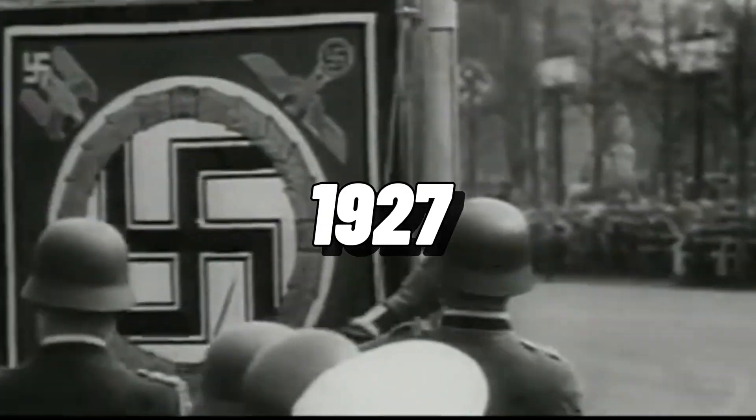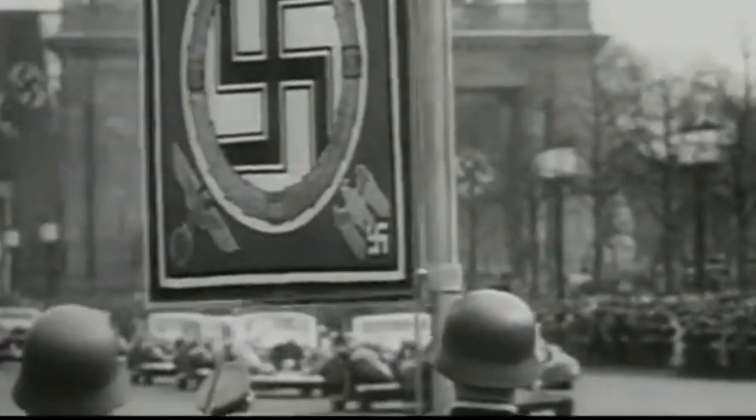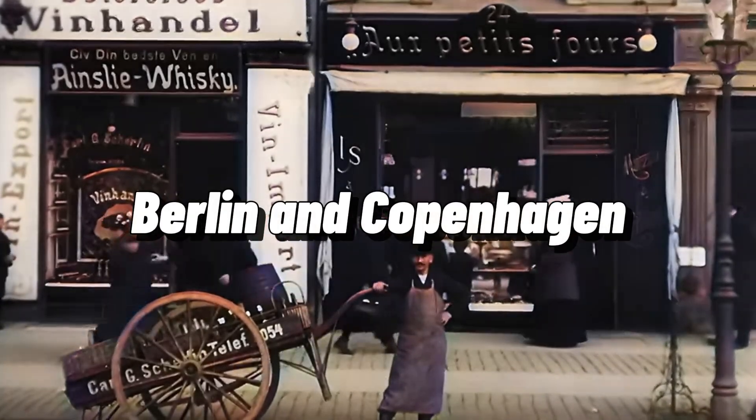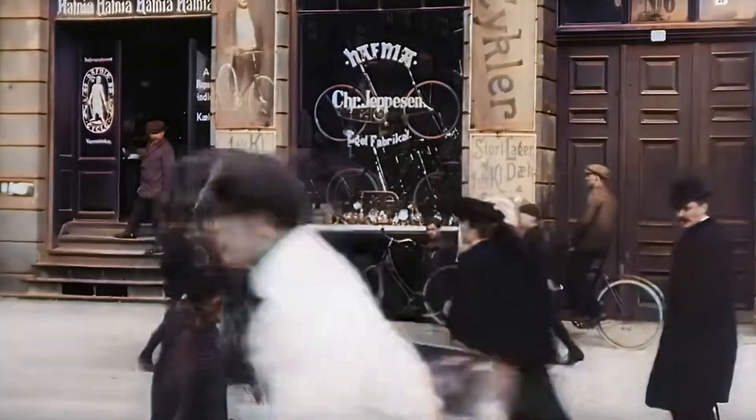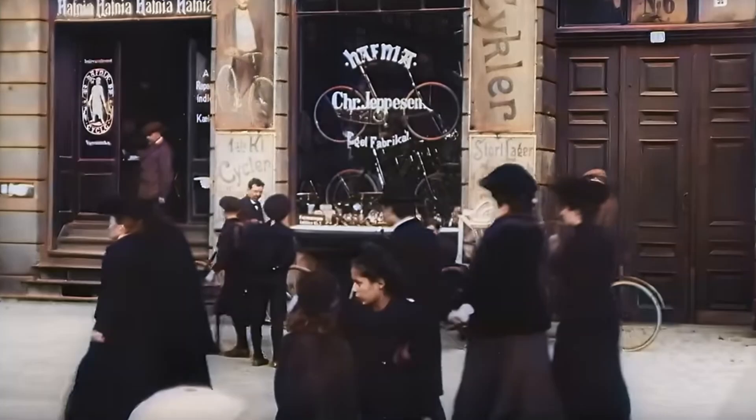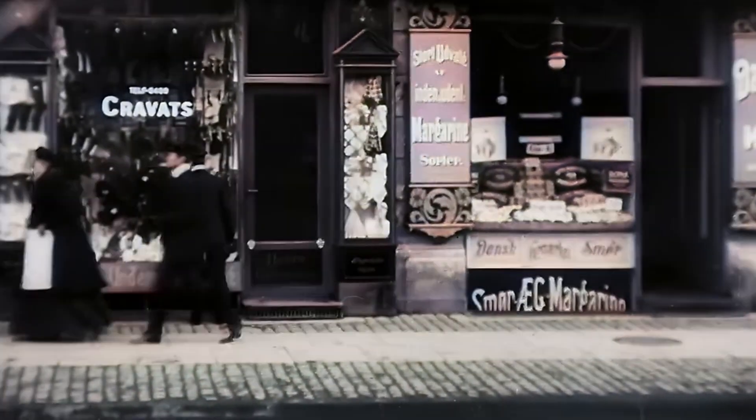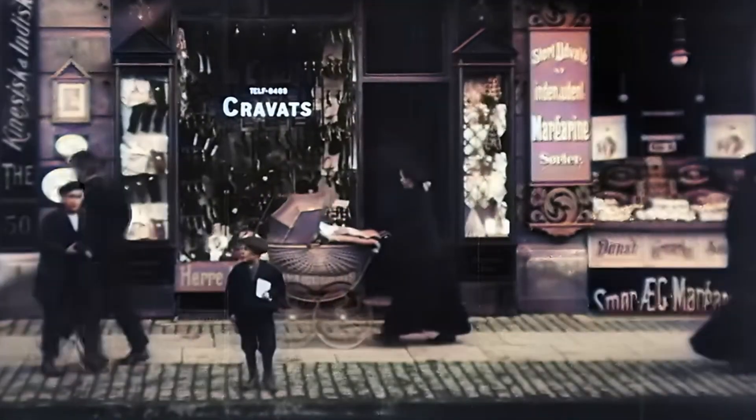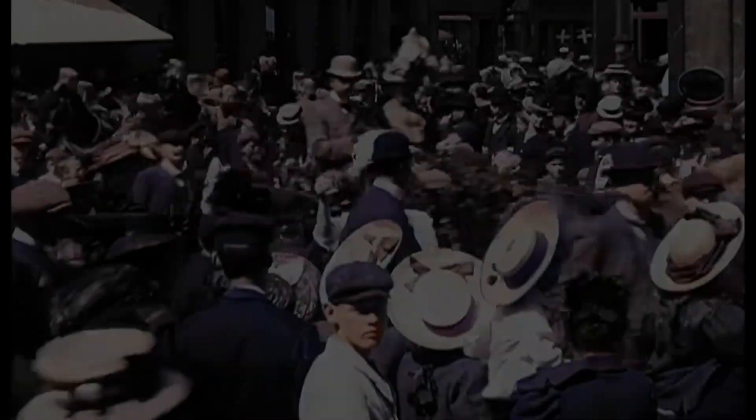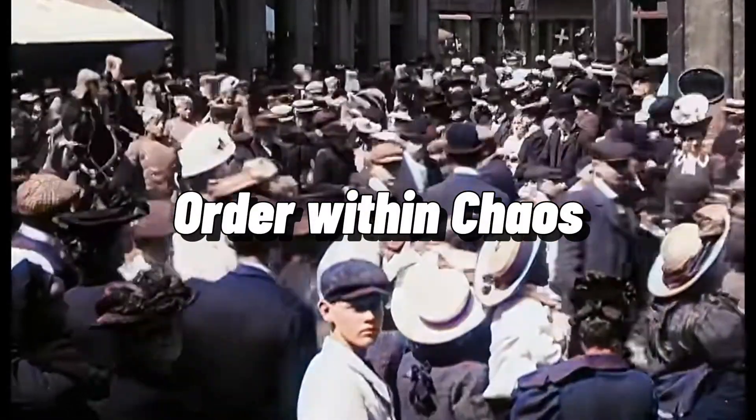Imagine it's 1927. The world is still reeling from past wars. In the cafes of Berlin and Copenhagen, physicists argue over the bizarre behavior of particles. And in a quiet, dimly lit room, a 25-year-old named Werner Heisenberg sits at a desk scattered with papers. He is searching for order within chaos.